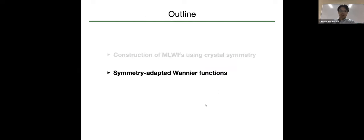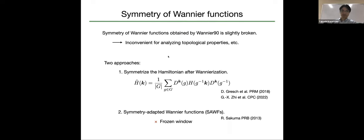That was the first topic. Let's move on to the next one: symmetry-adaptive Wannier functions with frozen windows. As pointed out by several talks in this meeting, the symmetry of Wannier functions obtained by Wannier90 is slightly broken, and this is inconvenient for analyzing topological properties. There are two approaches: one is symmetrizing the Hamiltonian after Wannierization, and the second is symmetry-adapted Wannier functions.